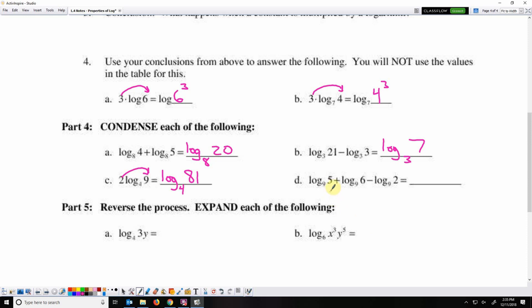Log base 9 of 21, and then I've got 3 here, log base 9 of 5 plus log base 9 of 6. So that's log base 9 of 5 times 6, which is 30. And then minus 2 means divided by 2, so that can be simplified even further to log base 9 of 15.